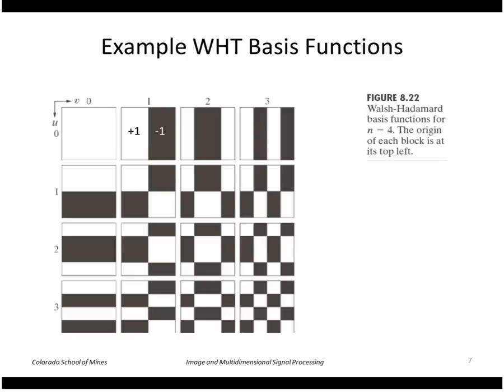In this case we're showing four by four basis functions for different values of u and v. When u is zero and v is zero, the basis function is just a constant of plus one. If the value of u is zero and v is one, then the basis function looks like this: